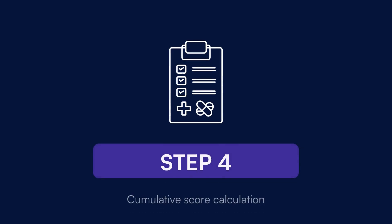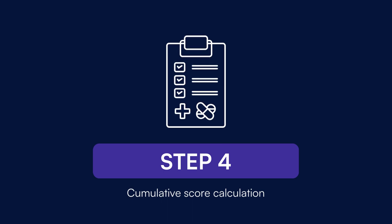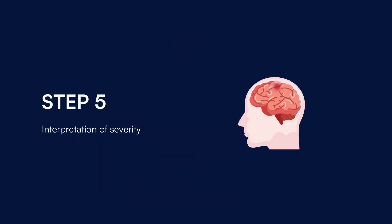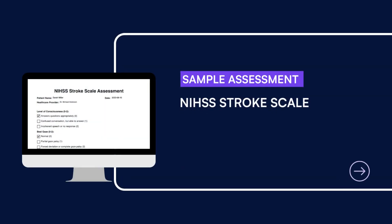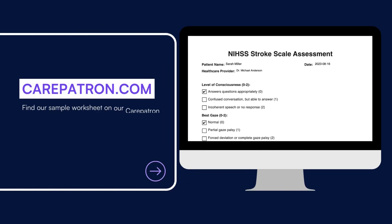The individual scores for each assessment point are added to obtain the patient's total NIHSS score. This cumulative score provides a quantifiable measure of the stroke's impact on the patient's neurological functions. The cumulative score correlates with the severity of the stroke — lower scores suggest mild impairment while higher scores indicate more severe deficits. Here is a sample of our NIHSS Stroke Scale, which you can find on our CarePatron platform.